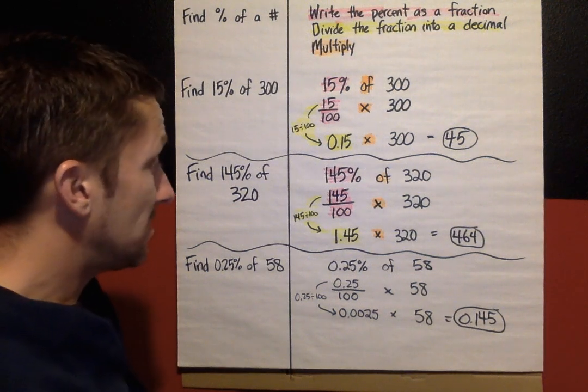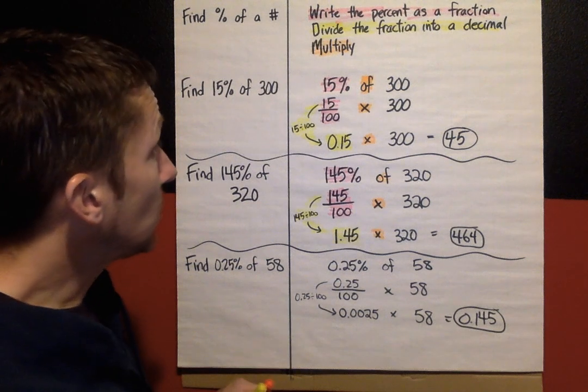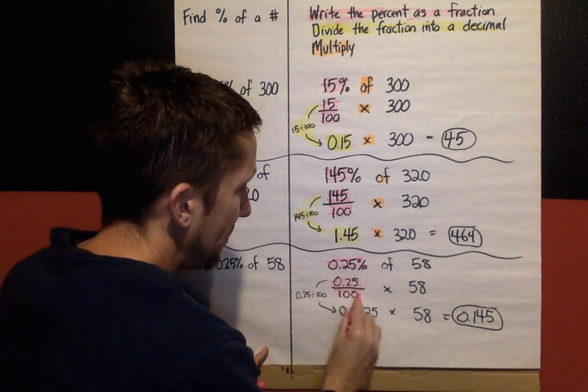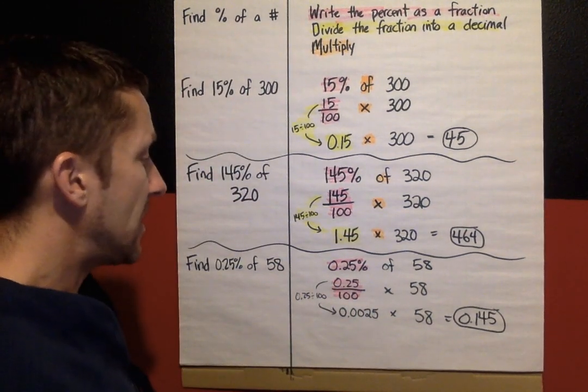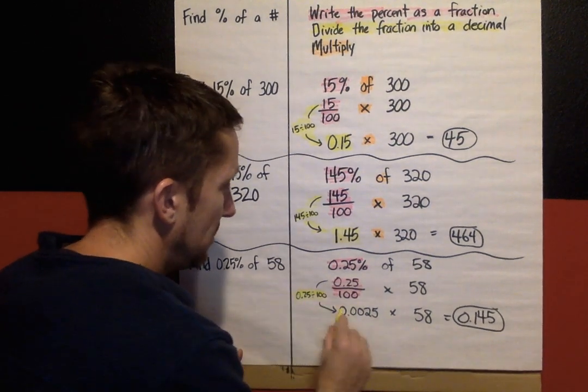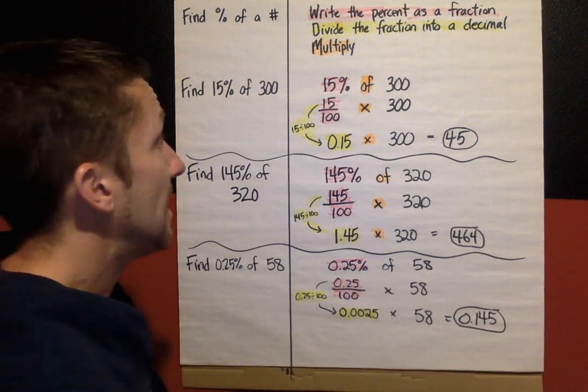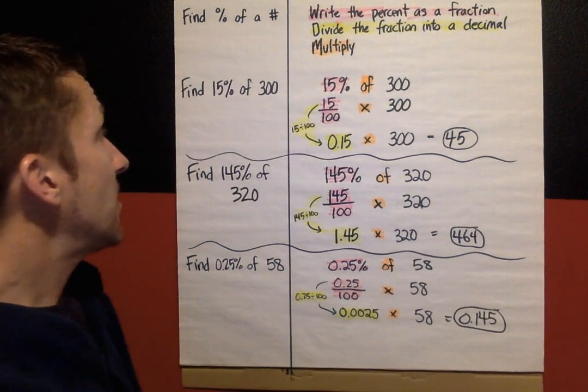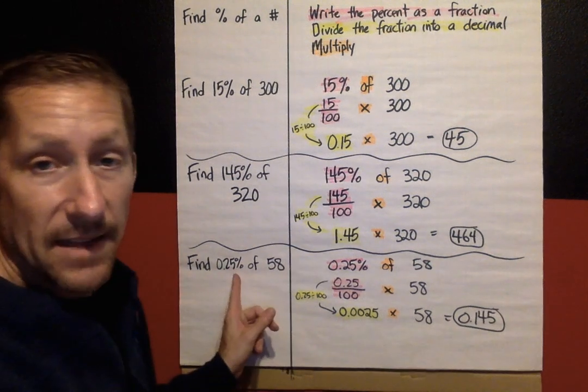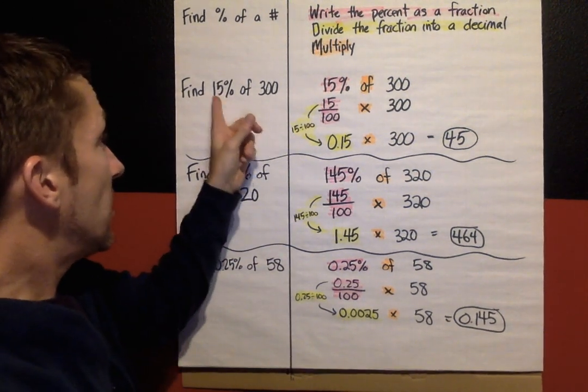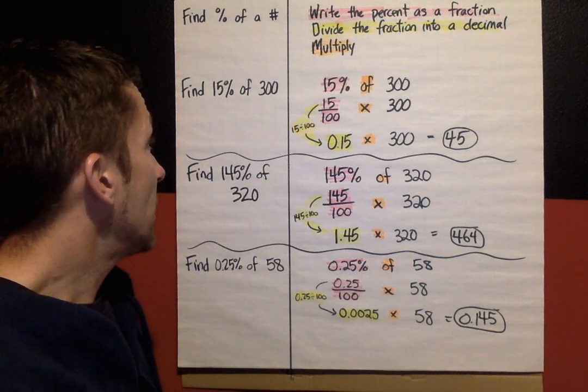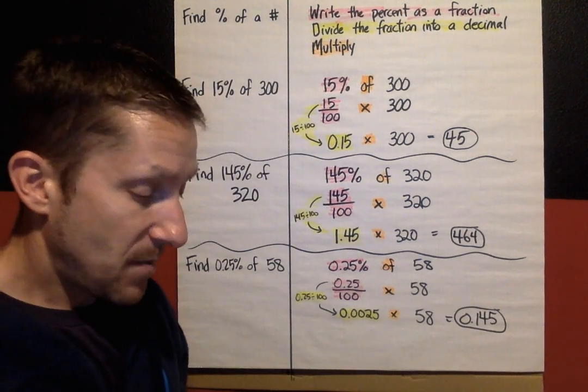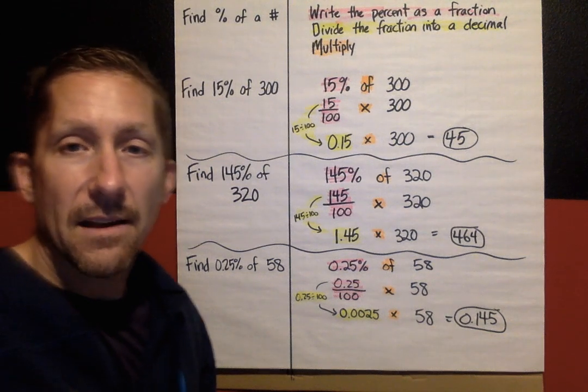So going back and highlighting the steps, the steps stayed the same. This whole page process never changed. Write the percent as a fraction. Divide the fraction into a decimal. And last is multiply. Doesn't matter if it is a percent less than 1, a percent greater than 100, or a percent between 1 and 100. Process right there. That's your practice for today. Stay tuned for the pages to be assigned in class. And I will see you next lesson.